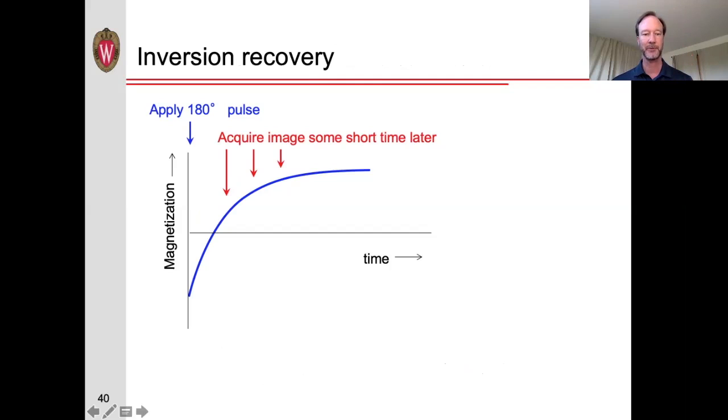So if we plot that longitudinal magnetization over time, this is what the recovery would look like. But we can then choose to acquire the data at some point in time later. And in particular, if we acquire the data at this point right here, then whatever tissue has this particular T1 relaxation rate will contribute no signal.